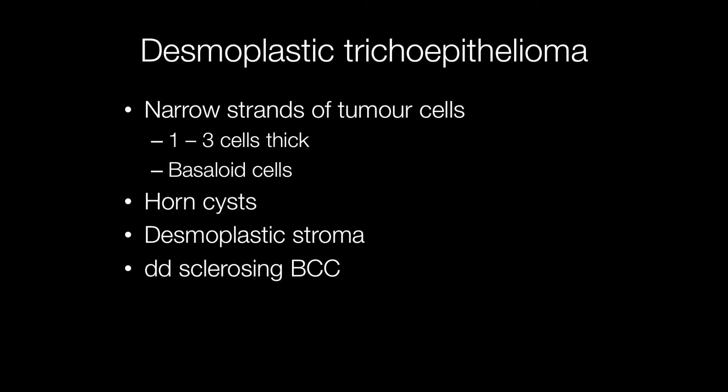That is the main differential diagnosis. However, desmoplastic trichoepitheliomas contain horn cysts, whereas sclerosing basal cell carcinomas don't.